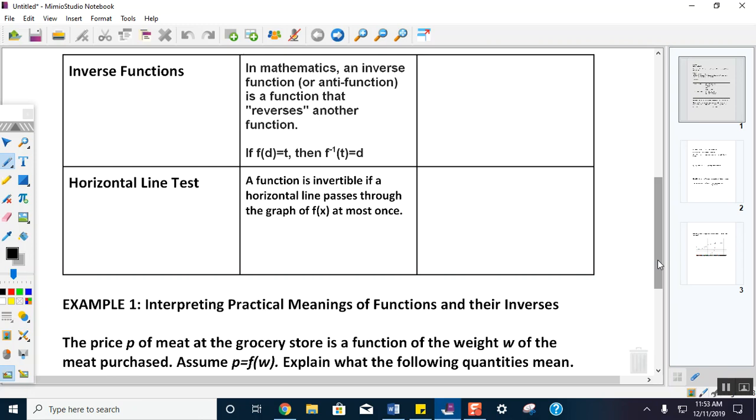In mathematics, an inverse function or anti-function is a function that reverses another function. If f of d equals t, then f inverse of t equals d. That little exponent of negative one is read as f inverse. As an example, if I said f of 3 equals 72, then that would mean that f inverse of 72 would map back to 3.